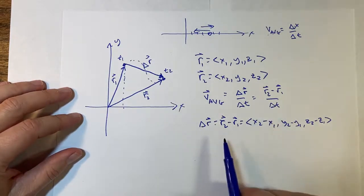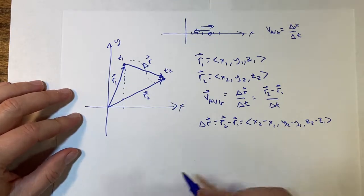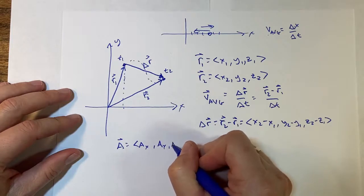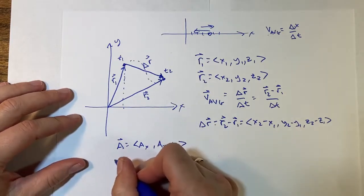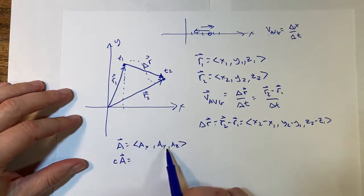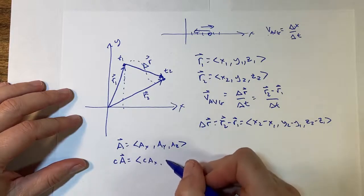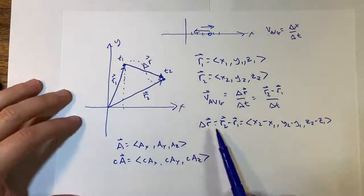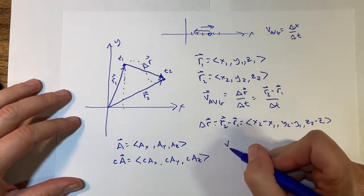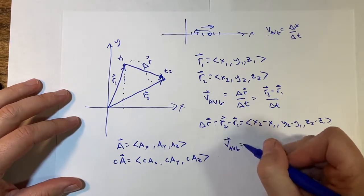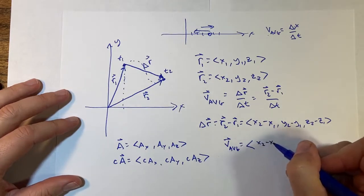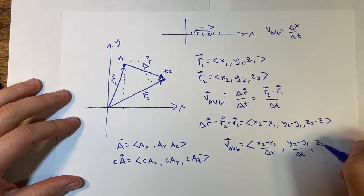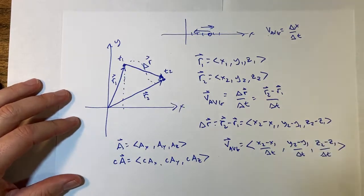Now, how do I deal with dividing by time? We can divide or multiply a vector by a scalar. If I have vector a and multiply it by some constant c, I just multiply each component by that same thing: (c·ax, c·ay, c·az). Division is the same. So each component gets divided by time: v_average equals (x2−x1)/Δt, (y2−y1)/Δt, (z2−z1)/Δt.